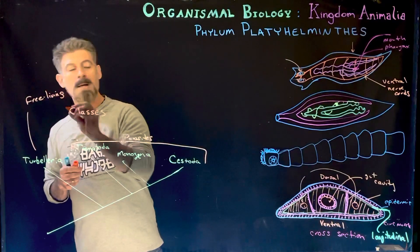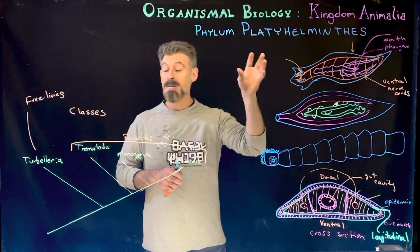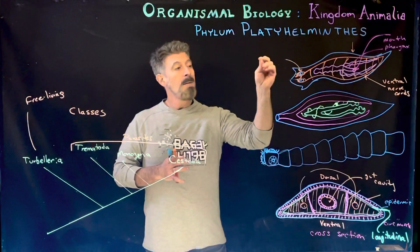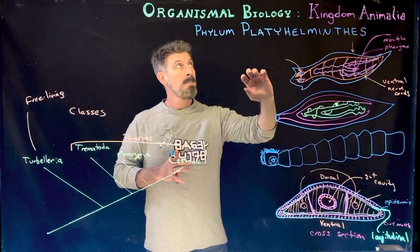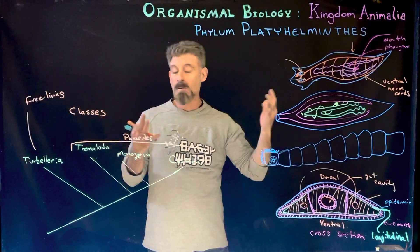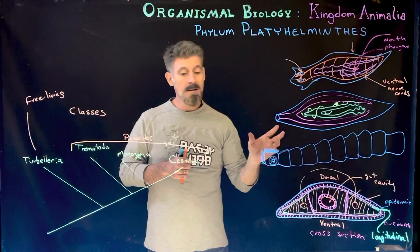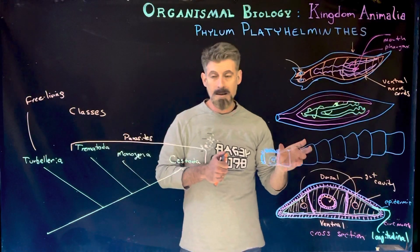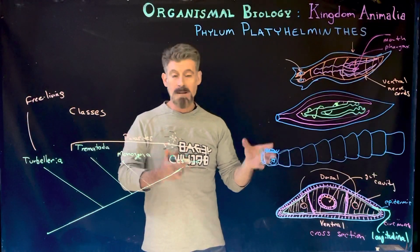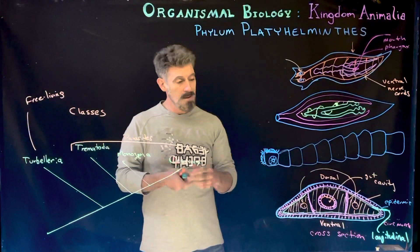Some Turbellaria are predators or detritivores, and because they live in an environment and move around, they have eye spots and a nervous system to detect their surroundings as they crawl around and interact with other organisms. Those structures become reduced in the more parasitic groups, especially ones highly dependent on a host — they don't really move around, just absorbing nutrients from their host.